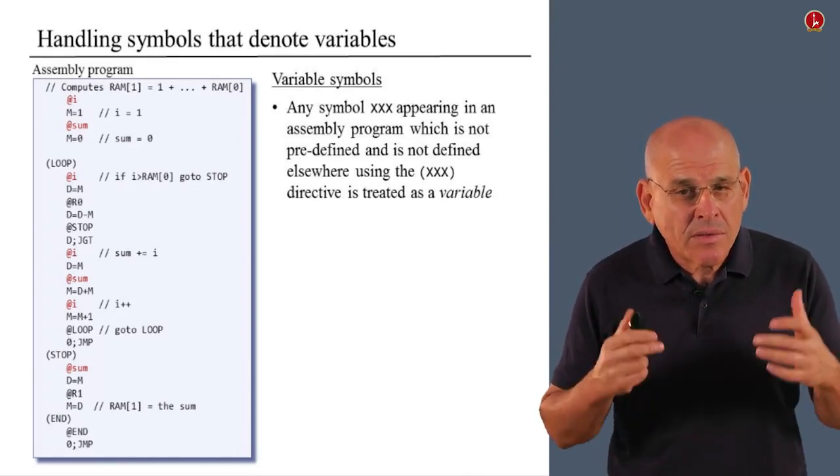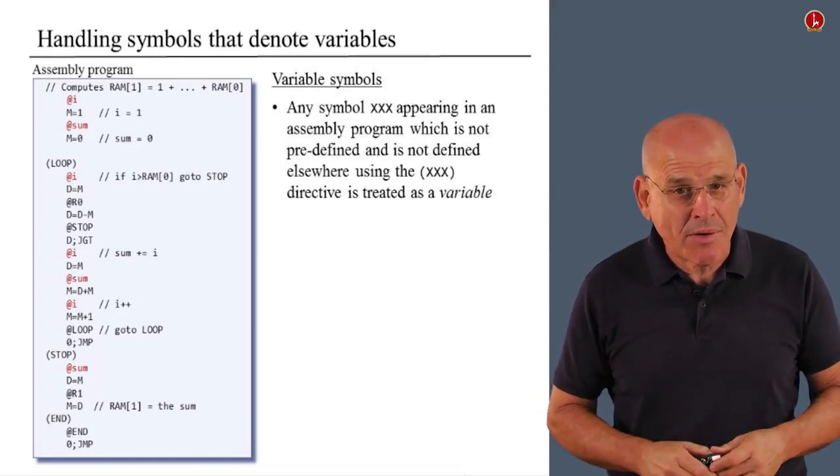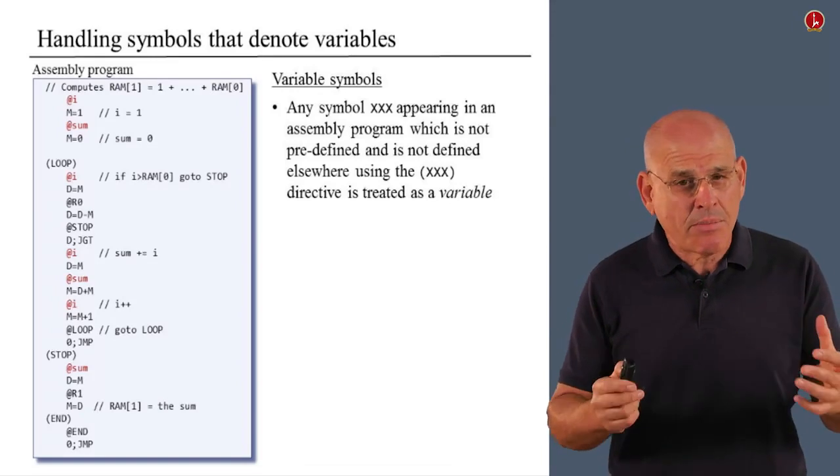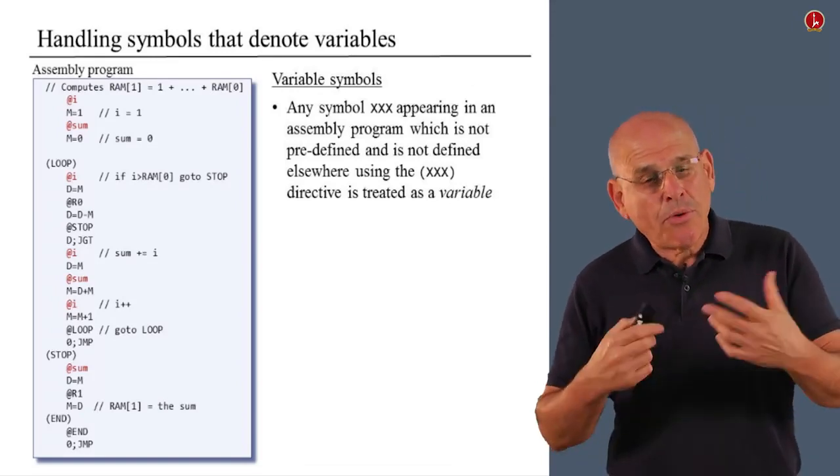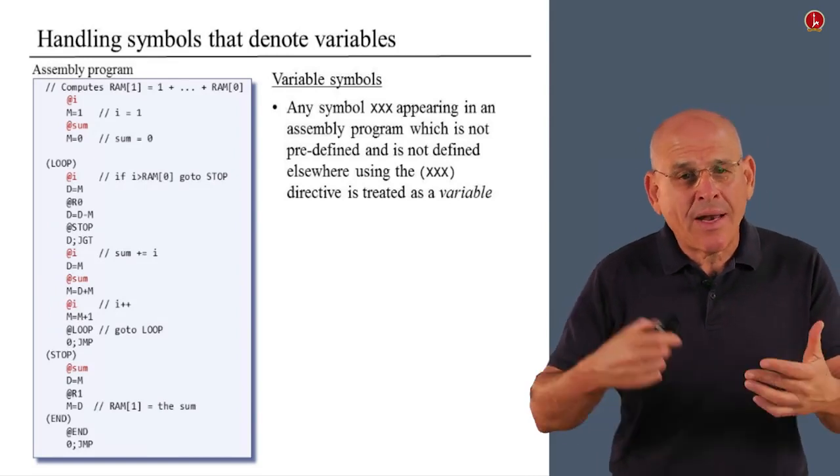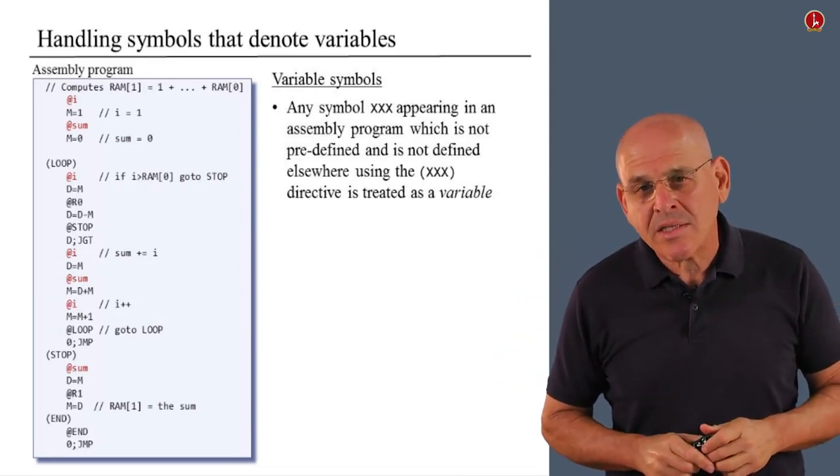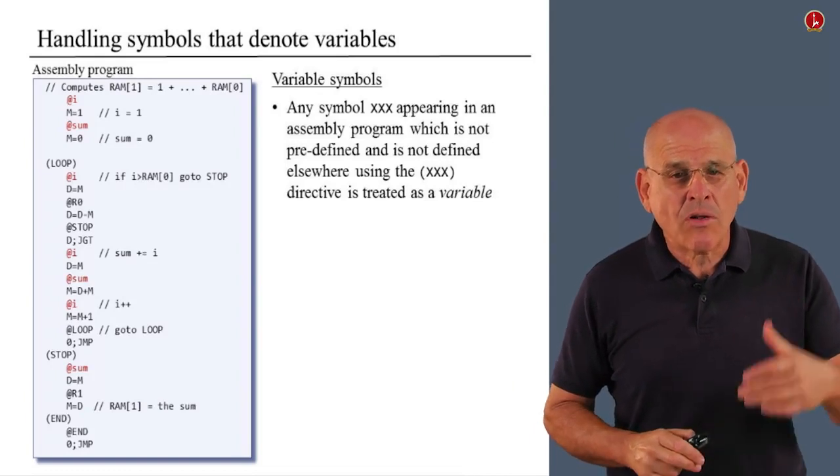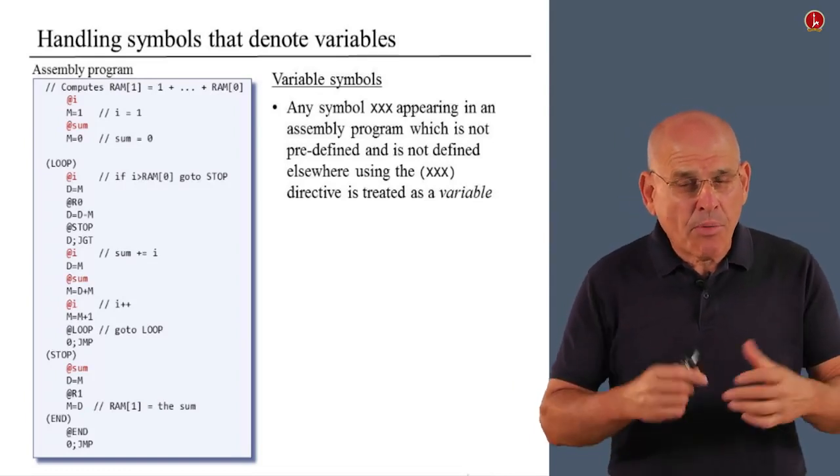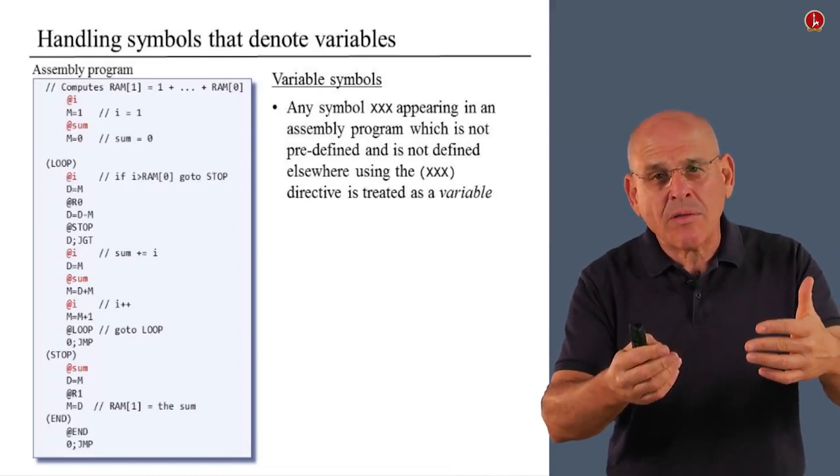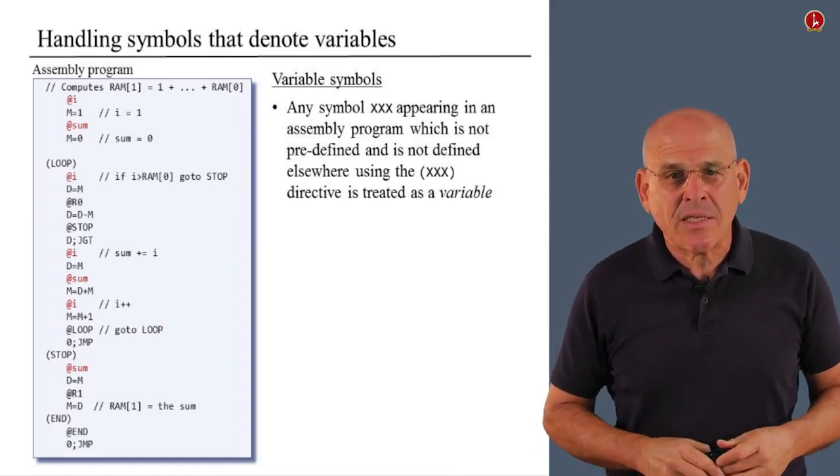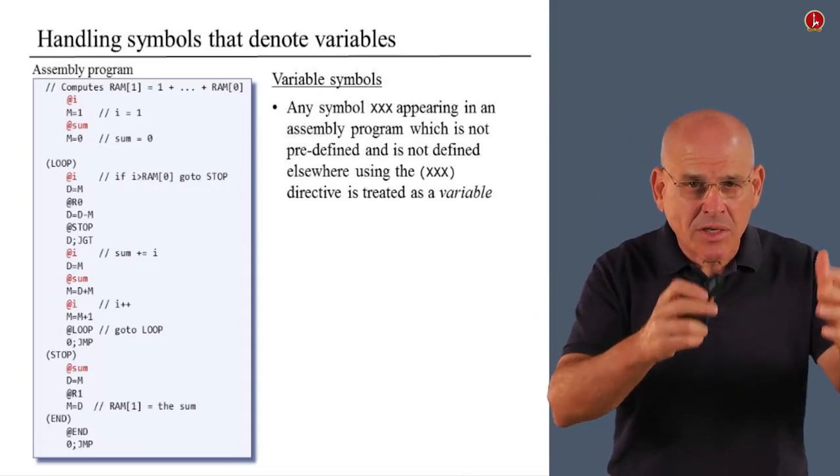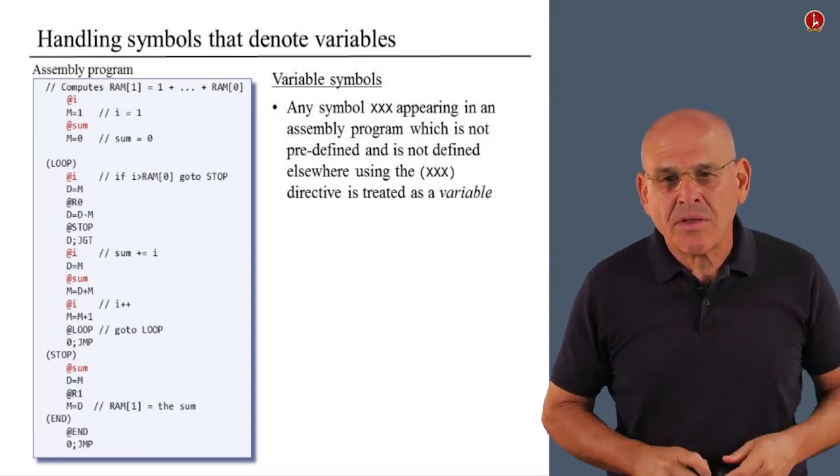And as you can imagine, the agent that implements this abstraction is the assembler. How do we do it? Well, according to the Hack language specification, any symbol that appears in a program, which is not predefined and is not accompanied by another label declaration statement is considered a variable. We have two such variables in the example in front of us, and they are called I and sum. And the program, as you can see, begins with four lines of code that basically declare and initialize these two variables to 1 and 0 respectively.